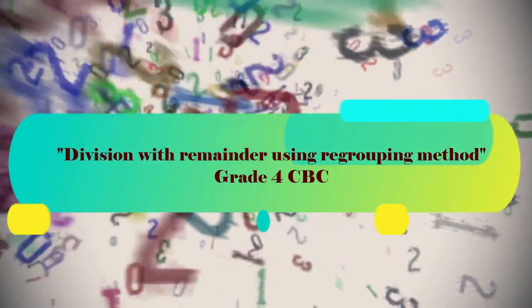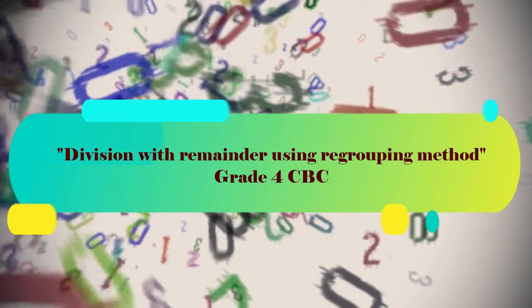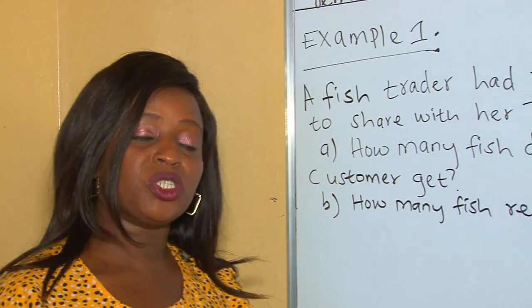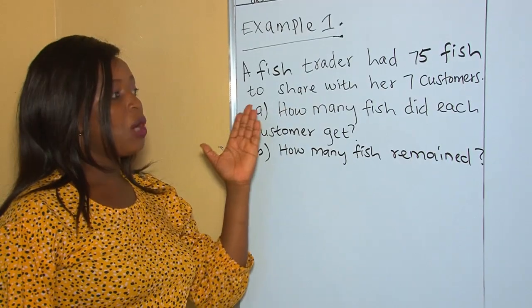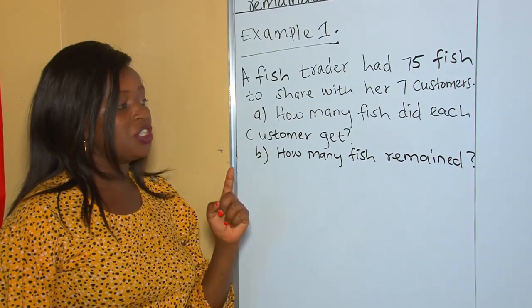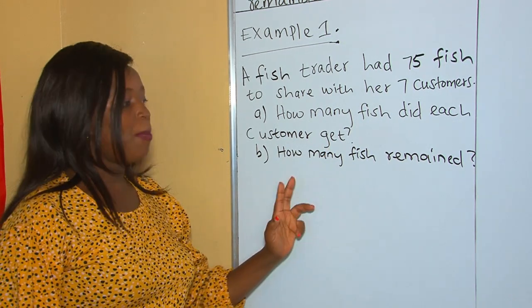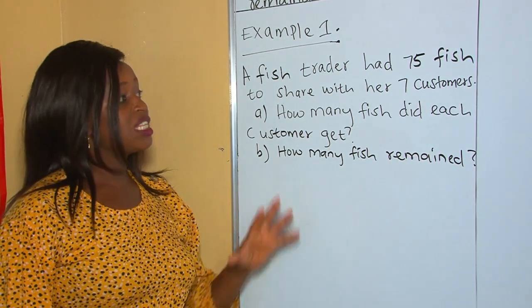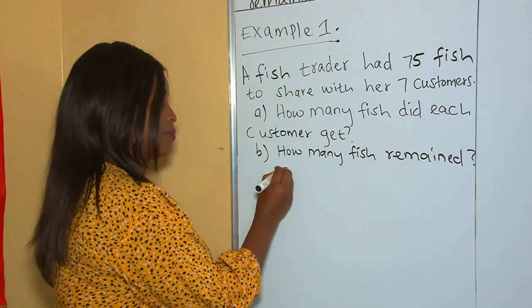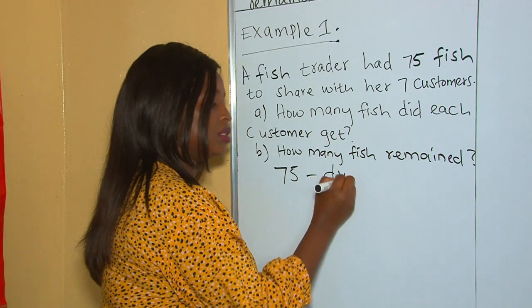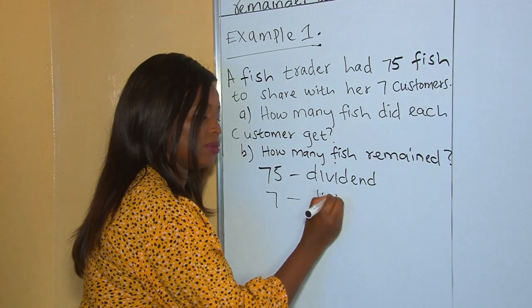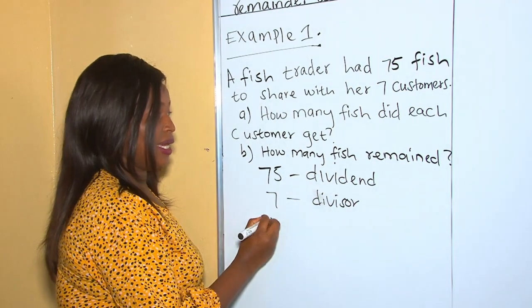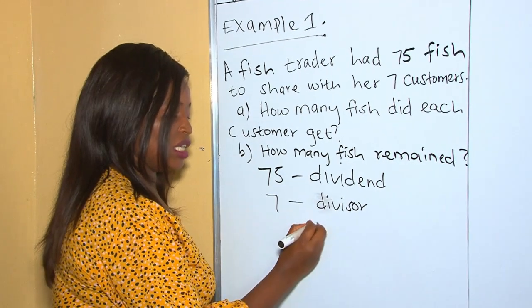Welcome once again to my YouTube channel. Today's lesson is about division with remainder using the regrouping method. For example, a fish trader had 75 fish to share with seven customers. In this question, 75 is our dividend, seven is our divisor, and the answer you are going to get is our quotient.